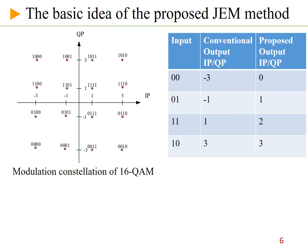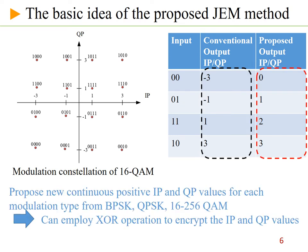Based on the idea of developing low complexity encryption methods that do not change the constellation modulation and use XOR operations, we propose new continuous positive I and Q values for each modulation time. As a result, we can employ this operation to encrypt the I and Q values.